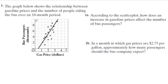Let's take a look at the first example. The graph below shows the relationship between gasoline prices and the number of people riding the bus over an 18 month period. The first question says, according to the scatter plot, how does an increase in gasoline prices affect the number of bus passengers?